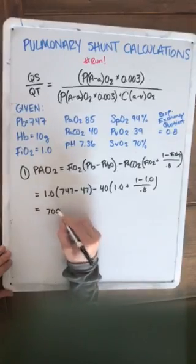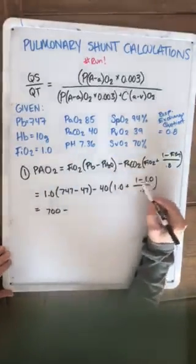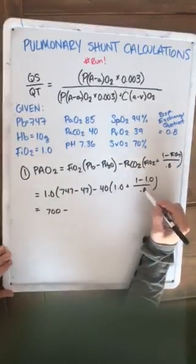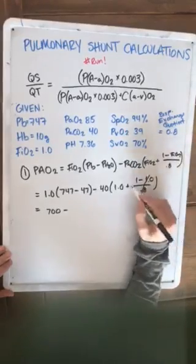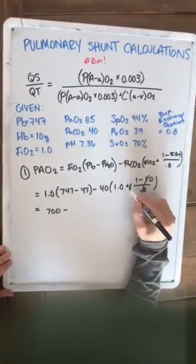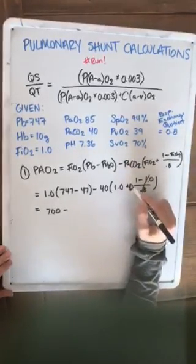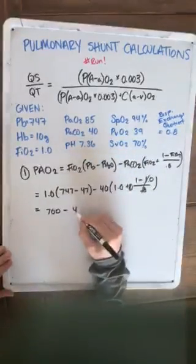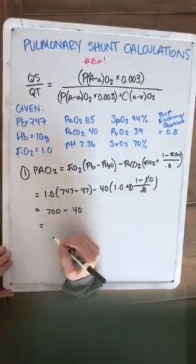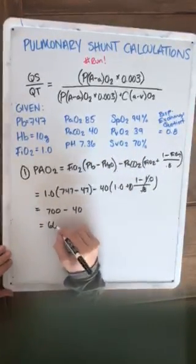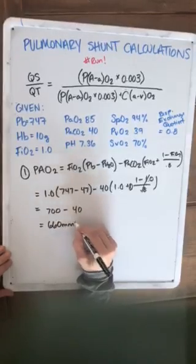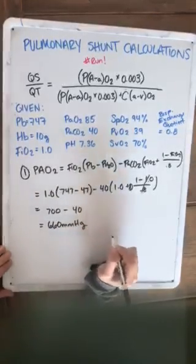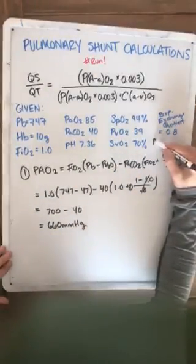So 747 minus 47 is 700 times 1, which is still 700, minus... 1 minus 1 is 0 over 0.8, so that'll cancel out to 0. 1 plus 0 is 1 times 40. So our P big A O2 is 660 millimeters of mercury. I'll write that up here and move on to step 2.